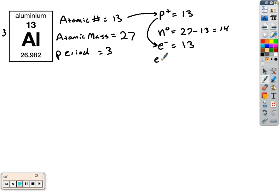That means it has three energy levels. And we're going to have to divide these thirteen electrons into three energy levels when we draw our model.